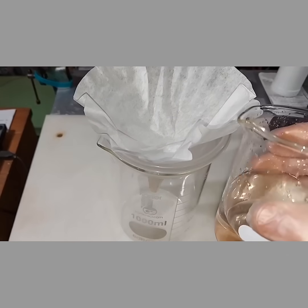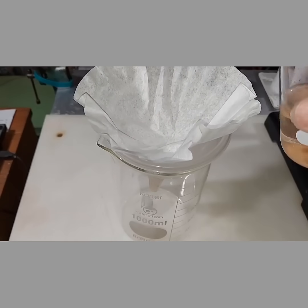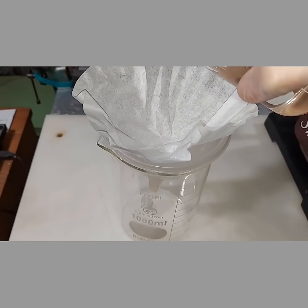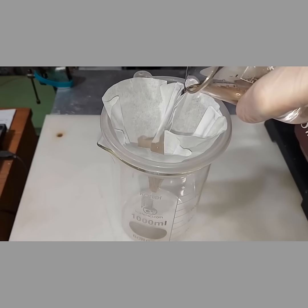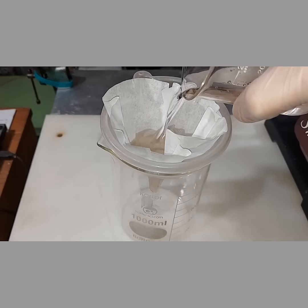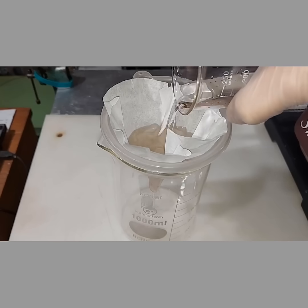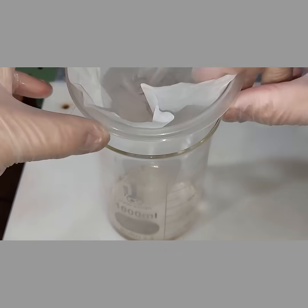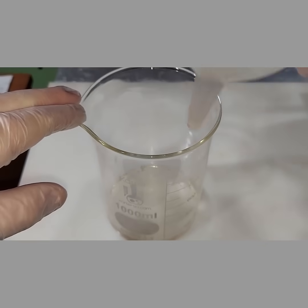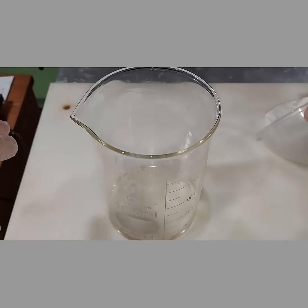So the lead acetate solution right here, I'm going to filter it through regular filter paper, coffee filter paper, into a wider one liter beaker. Because as crystals form, I want to be able to get them out easily. It's done filtering - I did that just to make sure that any undissolved lead oxide would be taken care of. So here's our pure lead acetate solution.